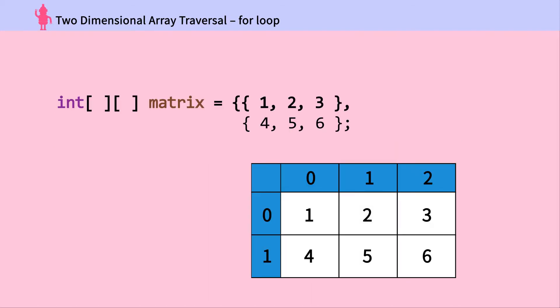For each row, we will go through the columns in that row. Once all columns are covered, we'll move on to the next row, then go through the columns one by one.